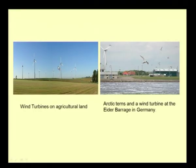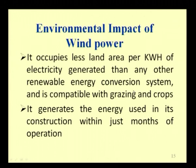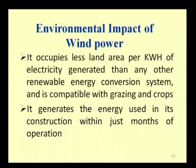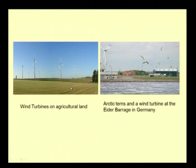Look at the diagram — these are onshore and offshore wind installations. Wind turbines on agricultural land occupy less land area per kilowatt hour. They are not occupying more area and cultivation is still happening around them. The energy conversion system is compatible with grazing and crops. The crops are not disturbed at all, and it is even told that cattle use the base pillars for rubbing. Therefore, wind power is more advantageous than any other source of energy.